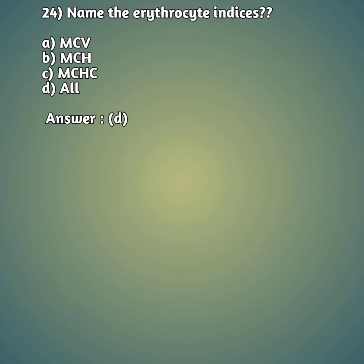Question 24: Name the erythrocyte indices — option A: MCV, option B: MCH, option C: MCHC, option D: all. The right answer is option D, all — that is MCV, MCH, and MCHC. These three are very important in defining the types of anemia.